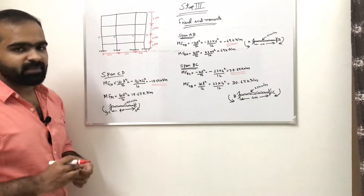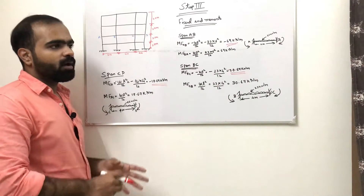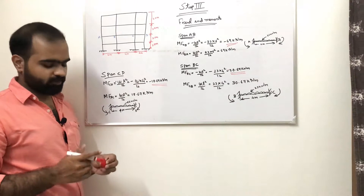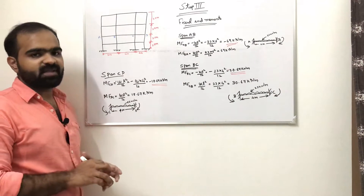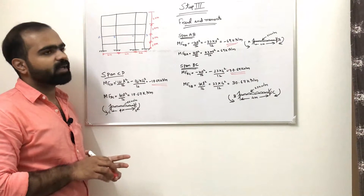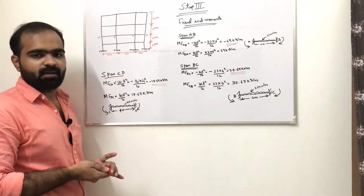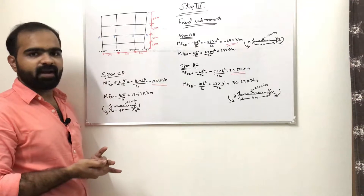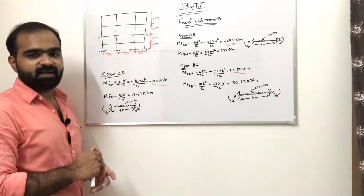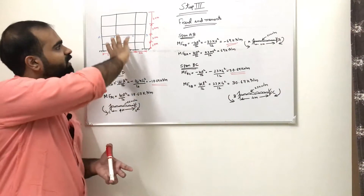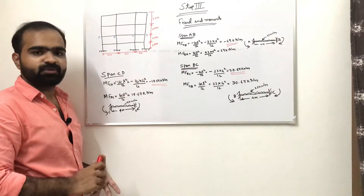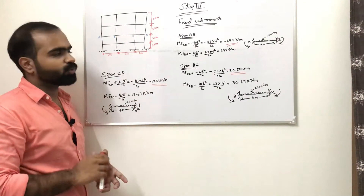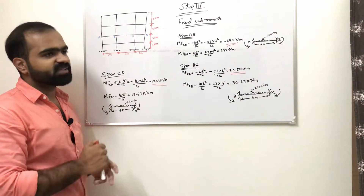We have calculated the loads and fixed end moments. Step 4 is the distribution factor. The moment of inertia of the beam is 2I and that of the column is I, as given in the problem. We will mark these moment of inertia values in the figure and use them to compute the distribution factors.